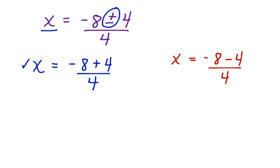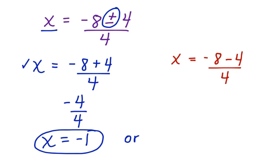Let's solve this one first. Negative 8 plus 4 is negative 4 divided by 4. x is equal to negative 1 here. Or, let's put that or there.